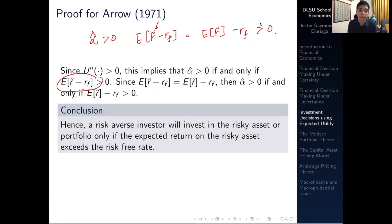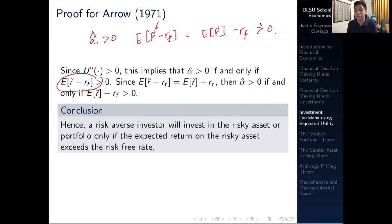We'll start with a numerical example in the next video. The key takeaway is a simple but fundamental theorem in finance: it is rational for a risk-averse investor to invest in a risky asset as long as the expected rate of return on that risky asset is greater than the risk-free rate. Thank you for your attention and I'll see you in the next video.